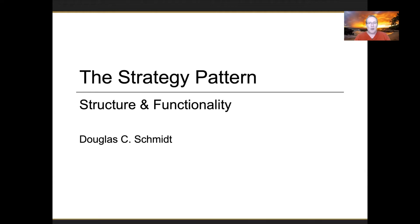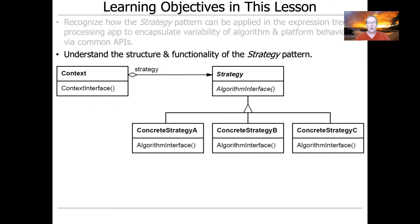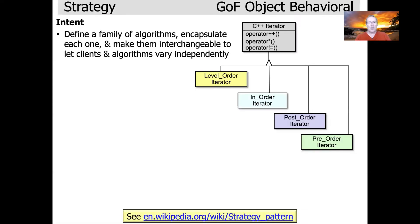Now I'd like to start talking about the structure and functionality of the strategy pattern from the point of view of what's in the Gang of Four book in terms of the intent and the applicability. The intent of the strategy pattern is to define a family of algorithms, encapsulate each algorithm, and make these algorithms interchangeable to let clients and algorithms vary independently. This is just the canonical definition of intent from the strategy pattern right out of the Gang of Four book.